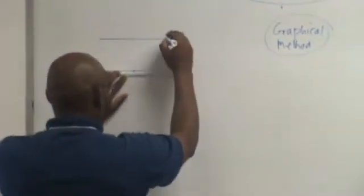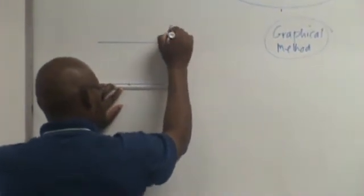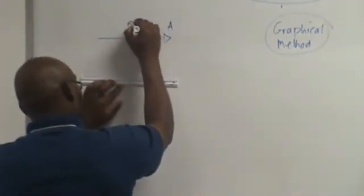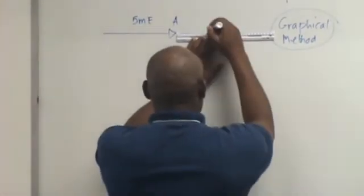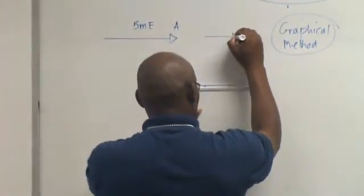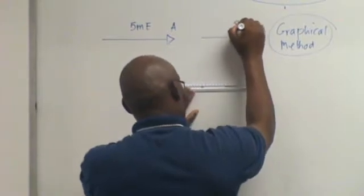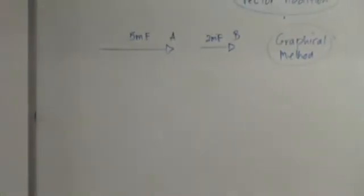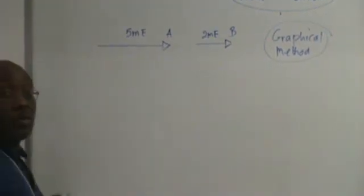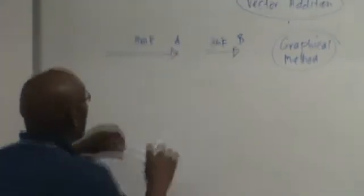Let's see we have vector A, 5 meters there in the east. Vector B, 2 meters there in the east. We want to add these two vectors. So I'm going to use the tail to tip method.